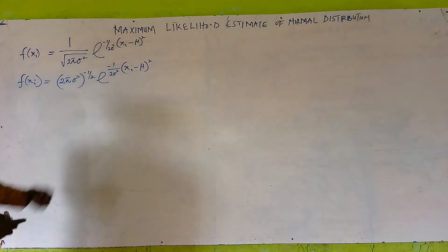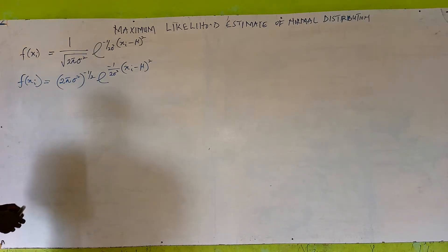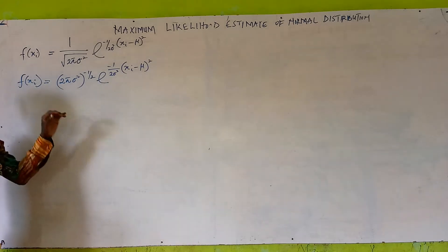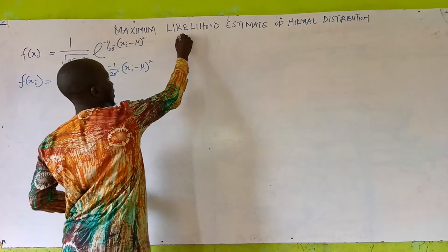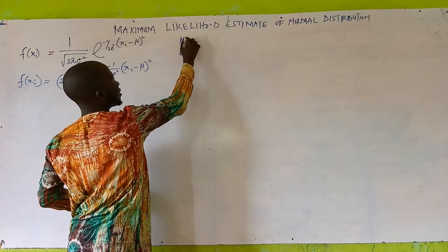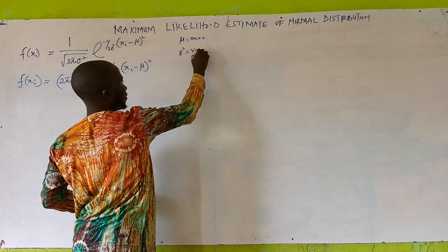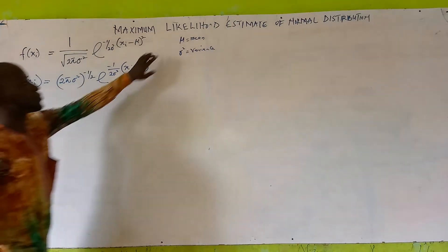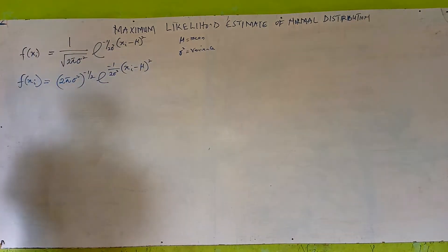This is another form of writing the normal distribution. In this distribution we have two parameters. The first parameter is mu, which is the mean. The second one is sigma squared, which is the variance. So now we are looking for the maximum likelihood estimate of the mean and sigma squared of this normal distribution.